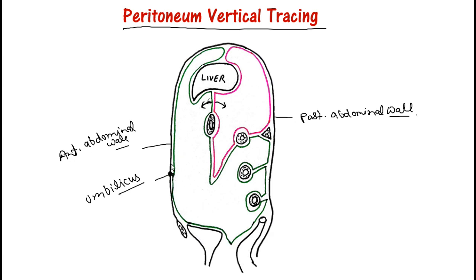The peritoneal reflection lies underneath the anterior abdominal wall, then it will reach up to the diaphragm. After that it encloses the liver at the porta hepatis. This layer will reflect onto the stomach and cover the anterior surface of the stomach, then reflecting downward as the greater omentum.